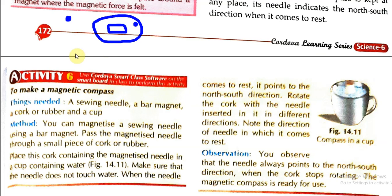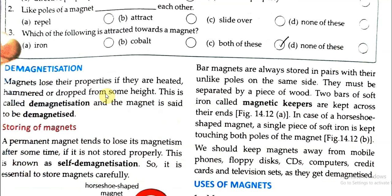Next we will see about demagnetization. Magnets lose their properties if they are heated, hammered, or dropped. A magnet does not remain a magnet forever — if it is not properly stored or cared for, it can get demagnetized. If a magnet is heated, hammered hard, or dropped from a height, its magnetism can be lost. This process is called demagnetization.